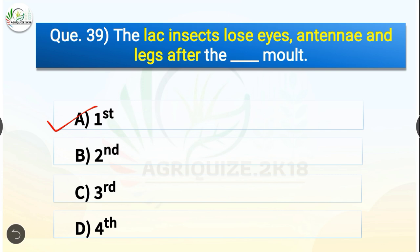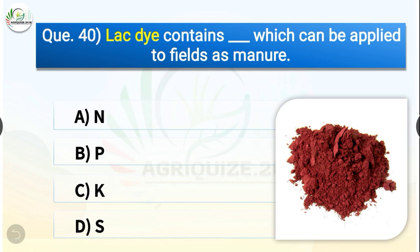Question number forty: Lac dye contains dash which can be applied to fields as manure. The options are nitrogen, phosphorus, potassium, or sulphur. The correct answer is option A — nitrogen. Lac dye contains nitrogen which can be applied to fields as manure.